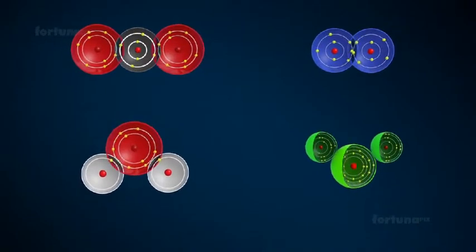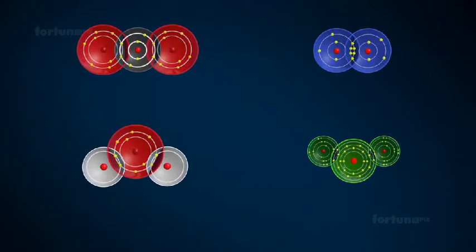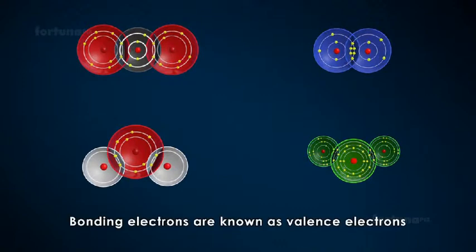An element's valency depends on the number of electrons that are available to participate in the formation of a bond. These bonding electrons are known as valence electrons.